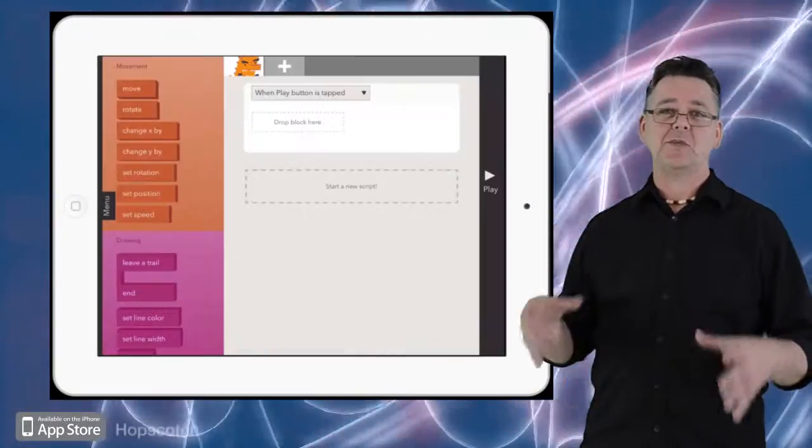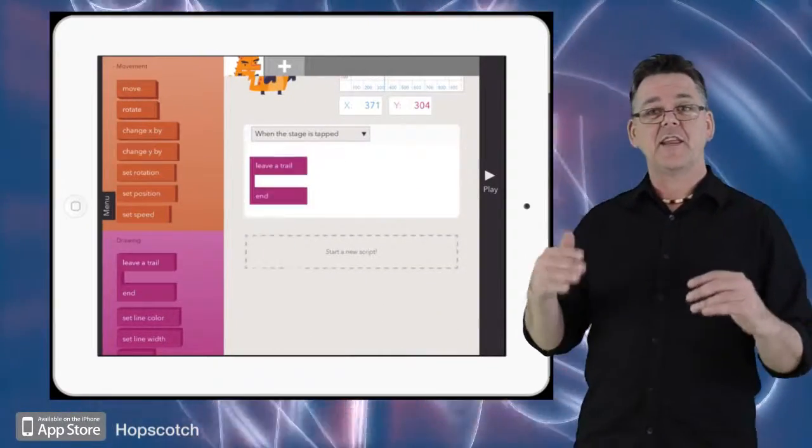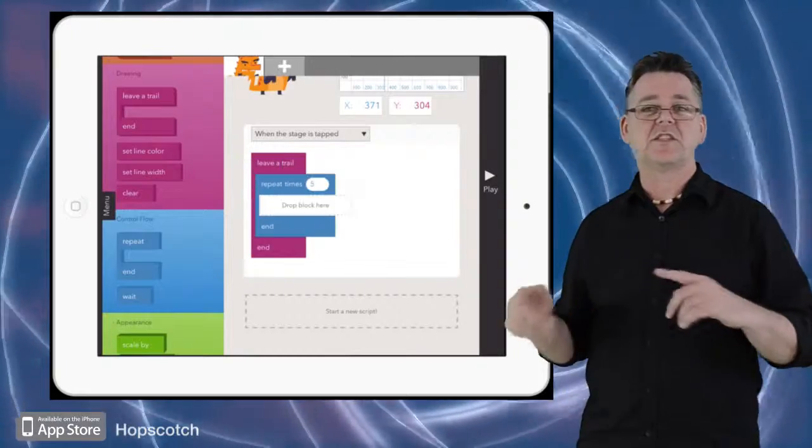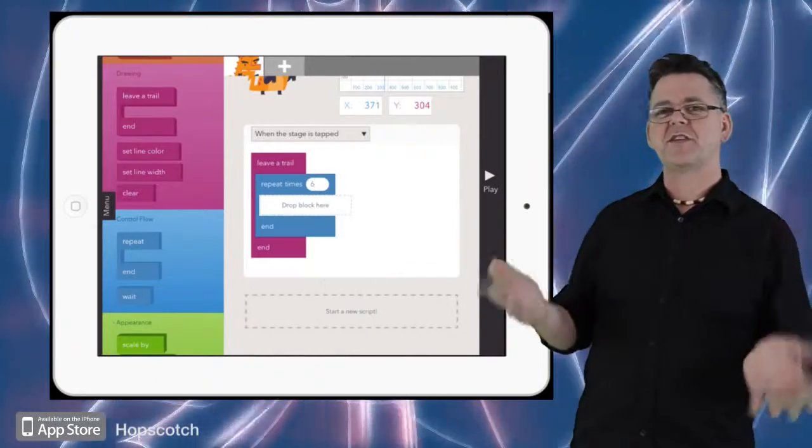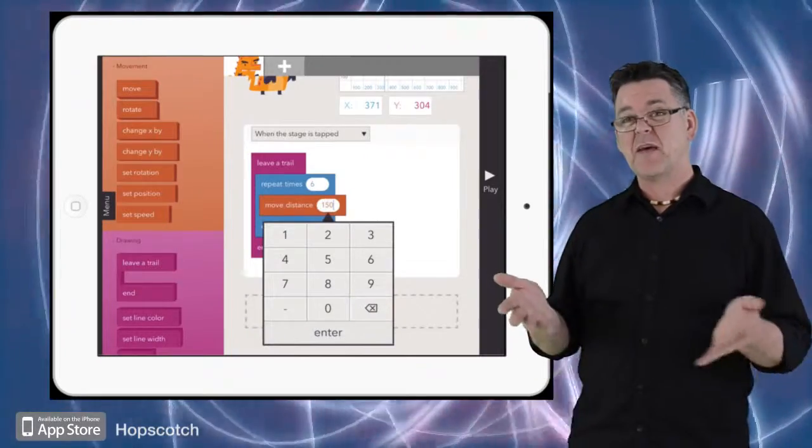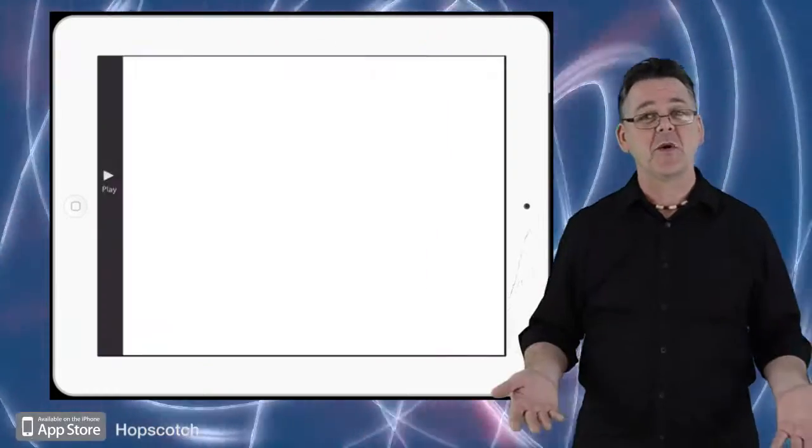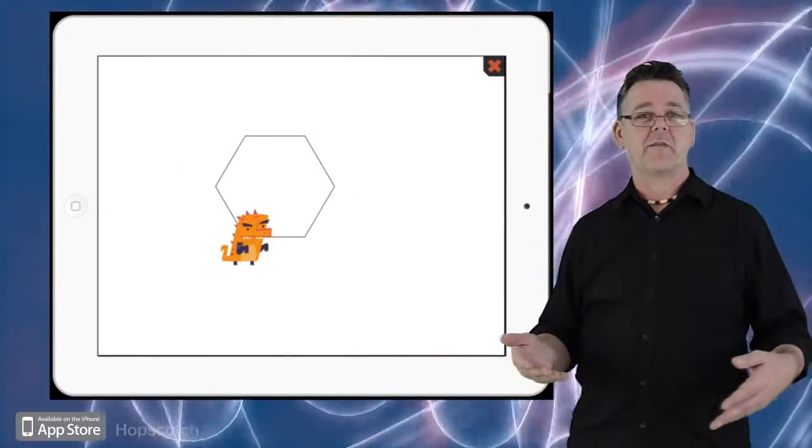For iPad users, it's worth taking a look at Hopscotch. Hopscotch uses visual code blocks, just like Scratch, that can be assembled together to form sequences and instructions. And although it has a limited range of blocks compared to something like Scratch, the fact that it makes use of the touch screen and the accelerometer in the iPad opens up some really interesting possibilities for creative programming ideas.